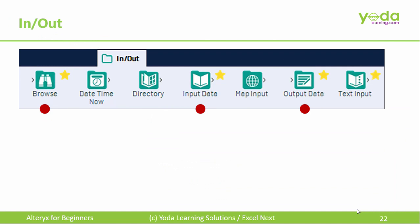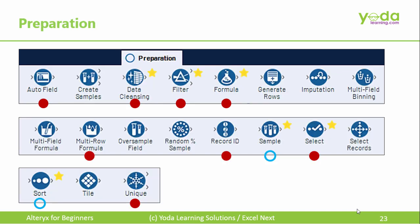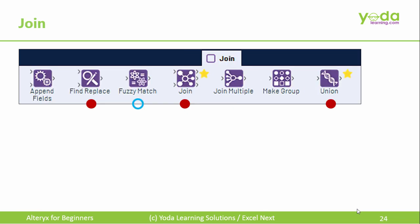You'll have a tab called In-Out, and you'll first focus on the red dotted icons. Next, the Preparation tools — you'll see some familiar names such as Formula, Filter, Sort, etc. And we'll see how to connect with Excel to help us learn this technique better.